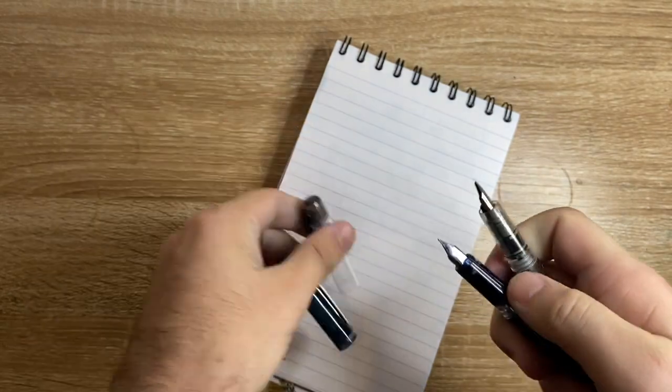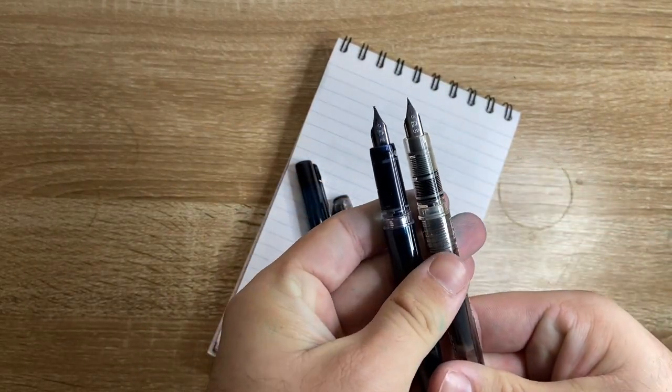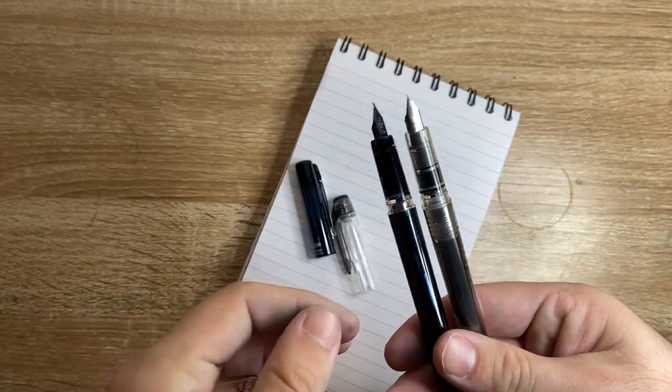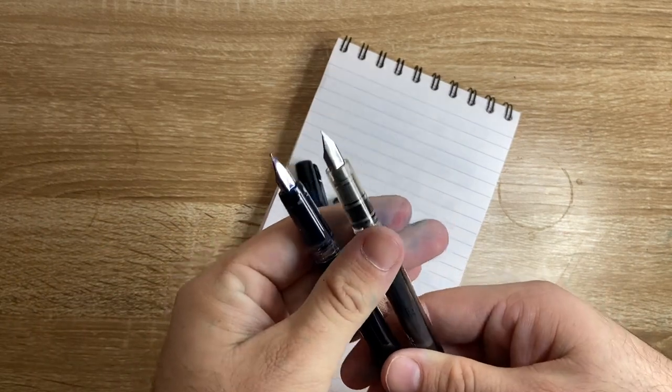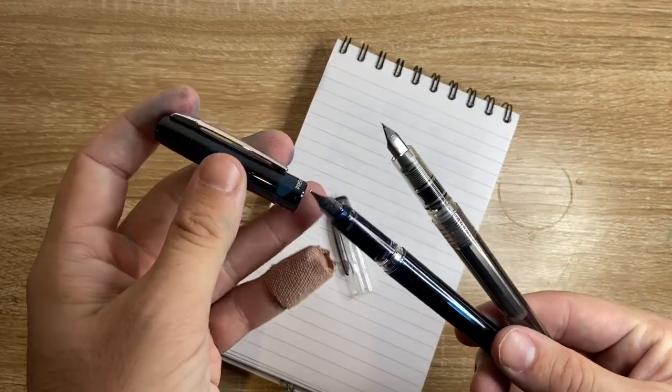But if we look at them uncapped, you'll see that they're basically the same sort of size section and the same nib. And they're both platinum proprietary converters or cartridges, or I assume can still be eyedropped, just like the original Preppy.